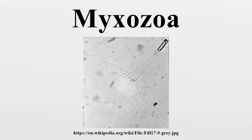The mixozoans are a group of aquatic parasitic animals. Over 1,300 species have been described and many have a two-host life cycle, involving a fish and an anode worm or bryozoan. The average size of a mixosporian spore usually ranges from 10 micrometers to 20 micrometers, whereas that of a malachosporian spore can be up to 2 millimeters.